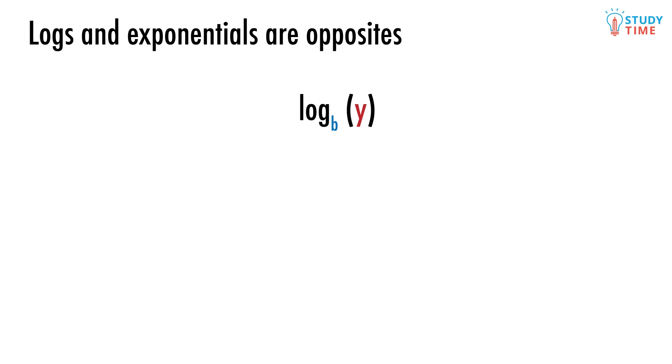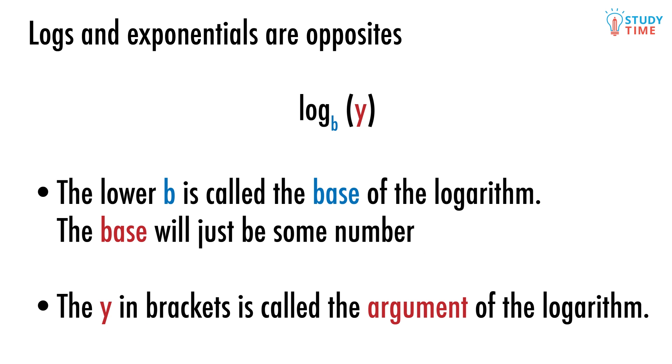Here the log tells us that we're looking at a logarithm. Then the lower b is called the base of the logarithm. The base will just be some number. The y in brackets is called the argument of the logarithm.